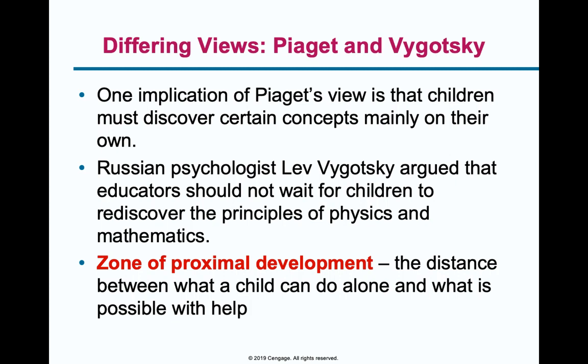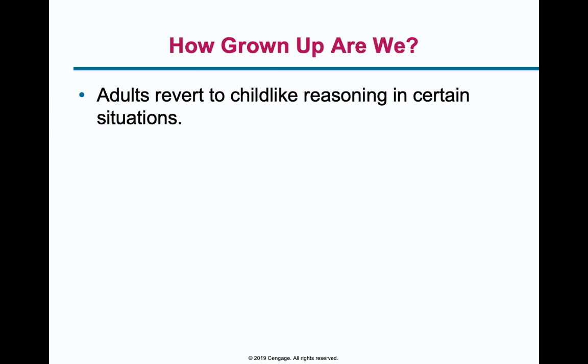Vygotsky called this the zone of proximal development — the distance between what a child can do by itself and what it can do with the help of someone else. This is the rationale for sending children to school: on their own they might not be able to pick up that information; they need the structure and commitment that school provides.